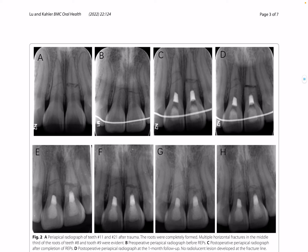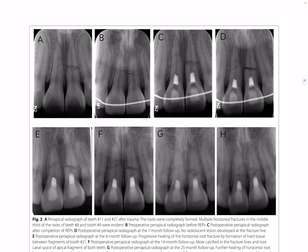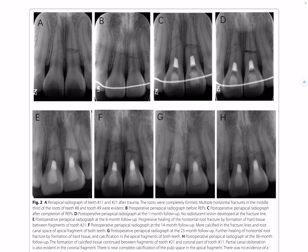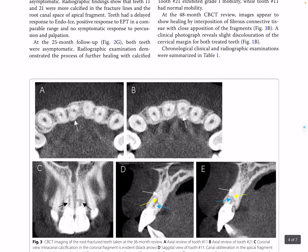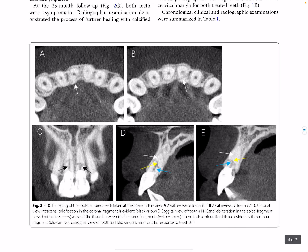The case demonstrated root fracture healing with calcified tissue and pulp calcification in the apical fragment. Both teeth were stable and in function. As shown in the periapical radiographs, there is a reduction in the fracture line from A to H across the follow-up period. CBCT imaging also shows obliteration and changes in the fracture line.